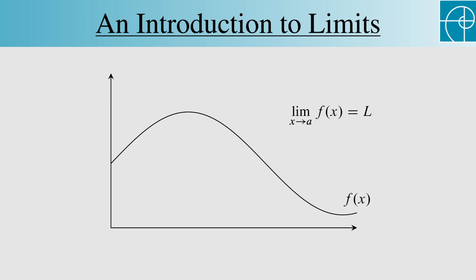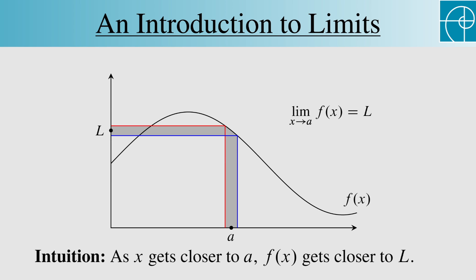Saying that a function f has a limit L at a, or as x approaches a, means that as x approaches a, f approaches L. So all of the points in this narrow interval around a are sent by f to a narrow interval around L. This is our intuitive notion of a limit.